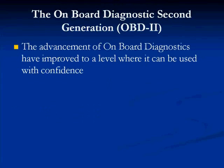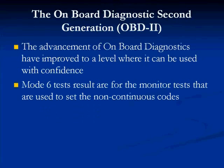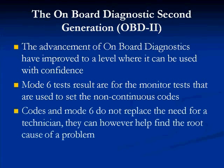The on-board diagnostic second generation OBD-II advancements have improved to a level where it can be used with all the confidence in the world. Mode 6 data results are for the monitor tests that are used to set non-continuous codes. Mode 6 information is very accurate and helpful. Codes in Mode 6 do not replace the need for a technician, but they can help you find the root cause of the problem.